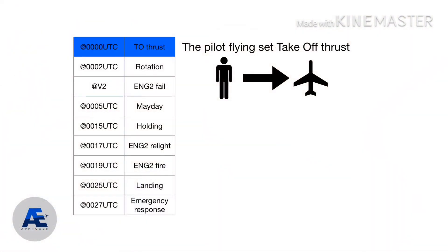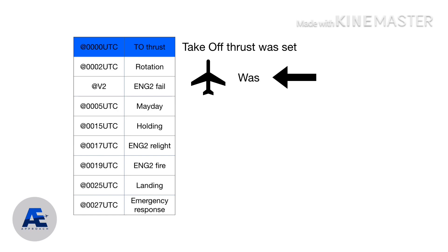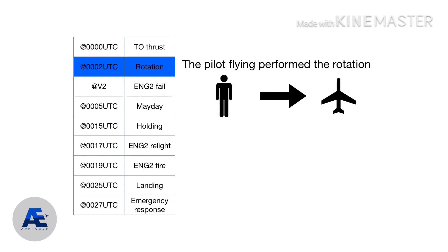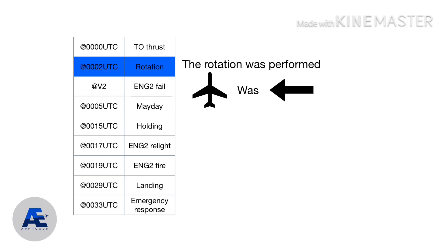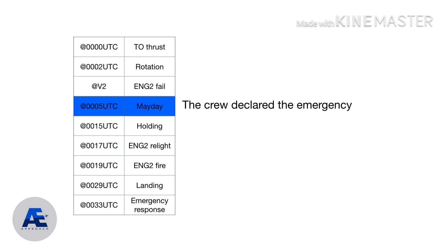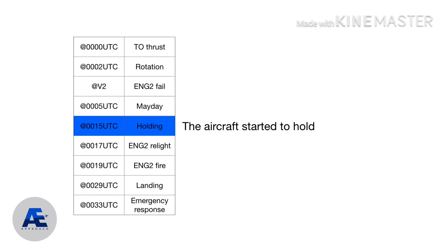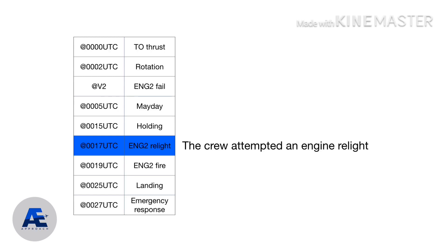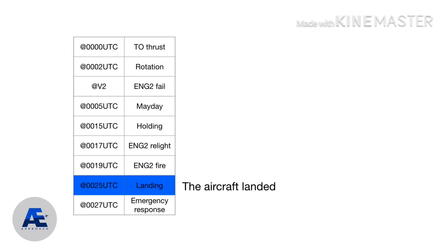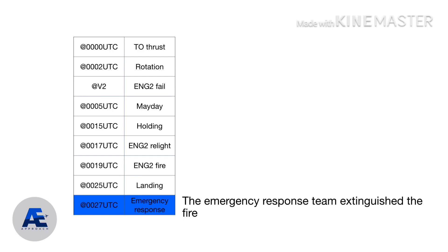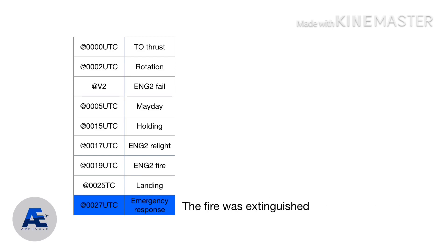Now let's apply this formula to the sentences of our event. 'The pilot flying set takeoff thrust' becomes 'Takeoff thrust was set.' 'The pilot flying performed the rotation' becomes 'The rotation was performed.' There are specific sentences we can't change — leave a comment telling us why. 'The crew declared the emergency' becomes 'The emergency was declared.' Some others we can't change either — let us know why. 'The crew attempted an engine relight' becomes 'An engine relight was attempted.' And finally, 'The emergency response team extinguished the fire' becomes 'The fire was extinguished.'